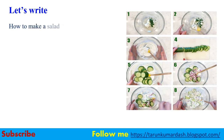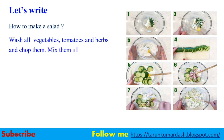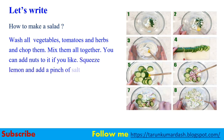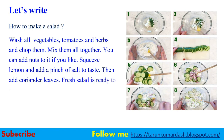How to make a salad: wash all vegetables, tomatoes, and herbs and chop them — that means cut them into small pieces. Mix them all together. You can add nuts if you like — it is according to your choice. Then take a lemon, cut it, squeeze the lemon, and add a pinch of salt to taste. Then add coriander leaves and your fresh salad is ready to serve.